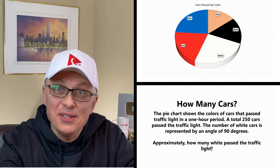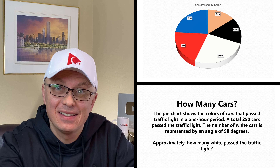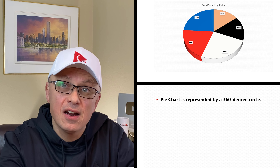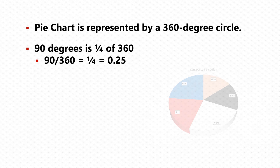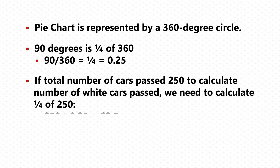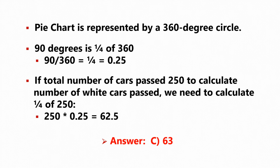A lot of times, the answer is given to you as part of the question, and this is one of those cases. A pie chart is represented by a 360-degree circle. We know that 90 degrees represents white cars, and 90 degrees is a quarter of 360. Dividing 90 by 360 gives 0.25. To calculate white cars, multiply 250 by 0.25, which gives 62.5. The closest value among the answers is 63. So the correct choice is C — 63.